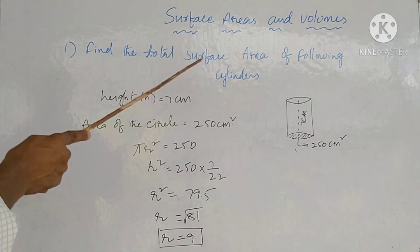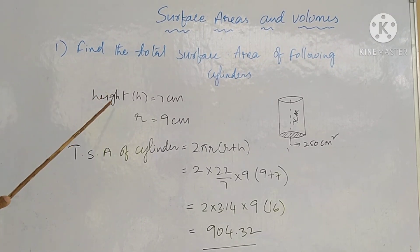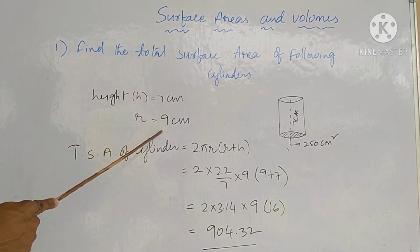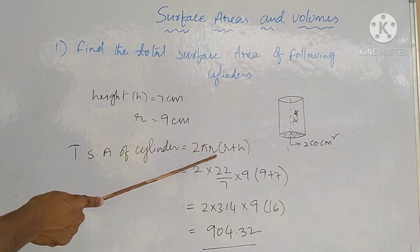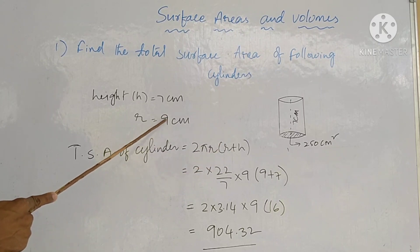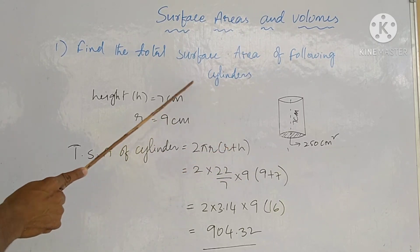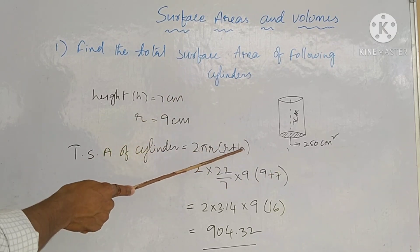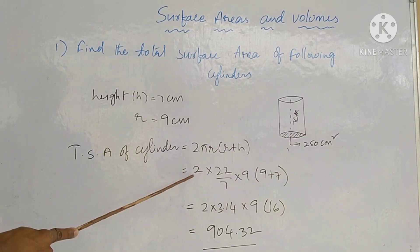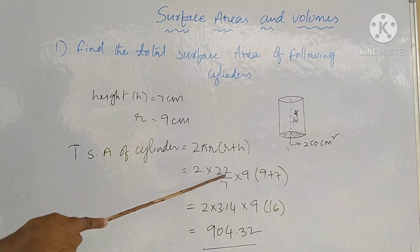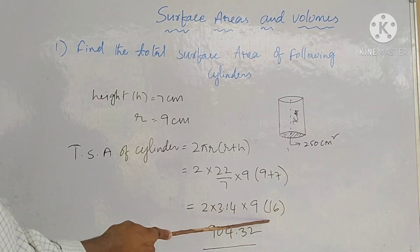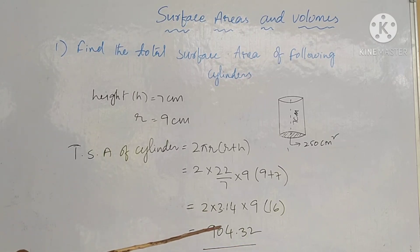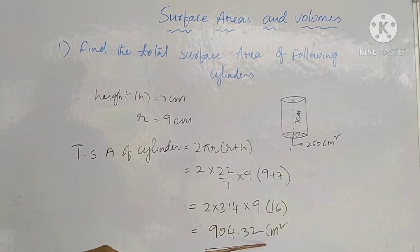Substitute h = 7 cm and r = 9 cm into the TSA formula: TSA = 2πr(r + h) = 2 × (22/7) × 9 × (9 + 7) = 2 × 3.14 × 9 × 16 = 904.32 cm². So the total surface area is 904.32 centimeters square.